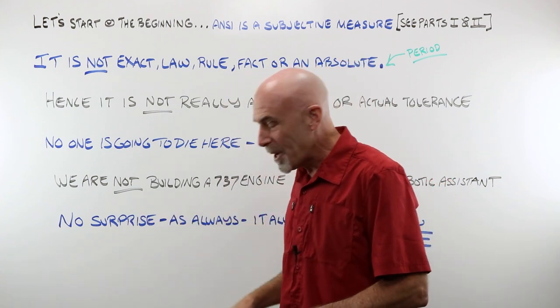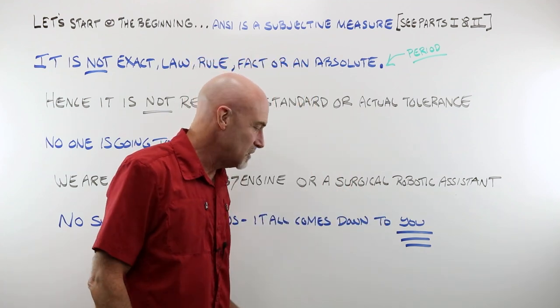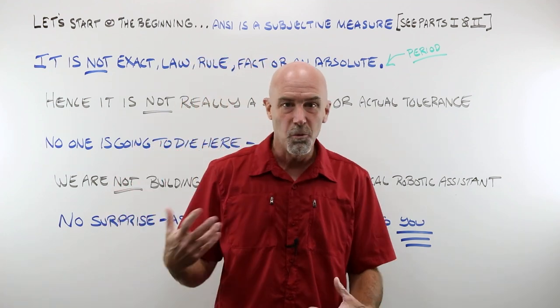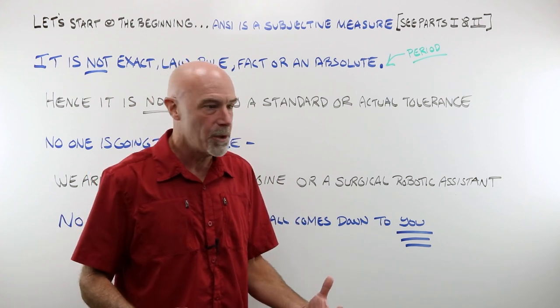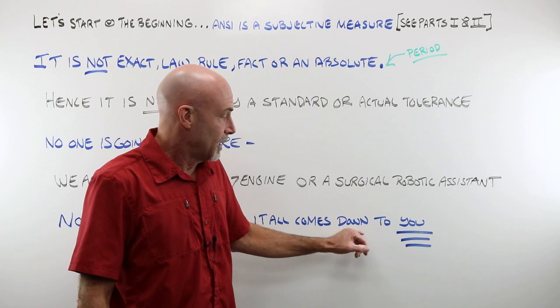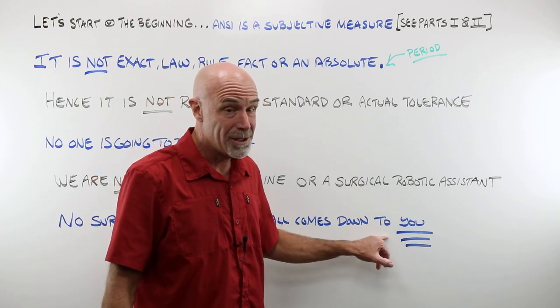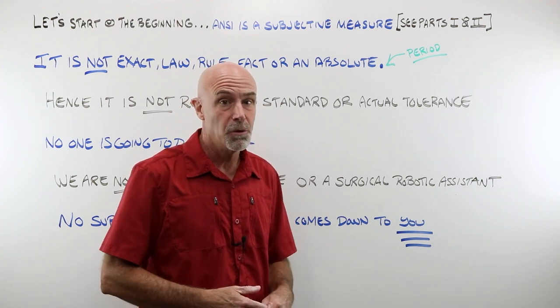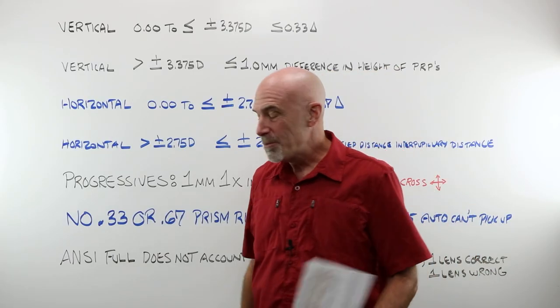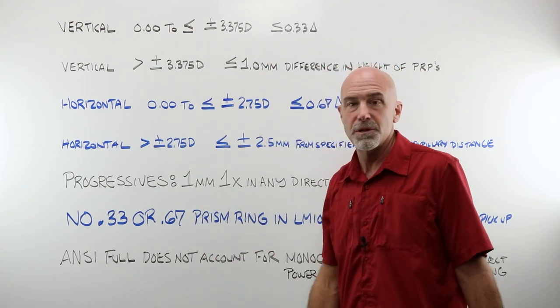So it's no surprise that, as always, making these decisions about what passes, what fails, how you interpret the range of powers that are on a lens, it all comes down to you. And most important, you understanding what you're doing. Straight from the quick guide, there are the guidelines for vertical and for horizontal.